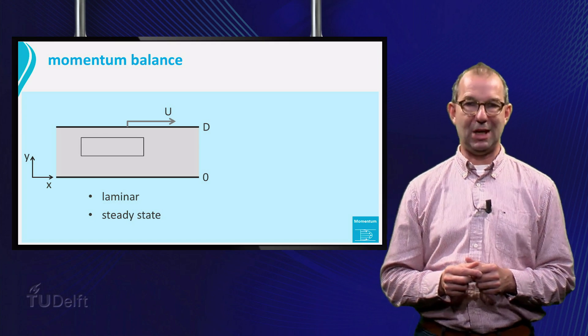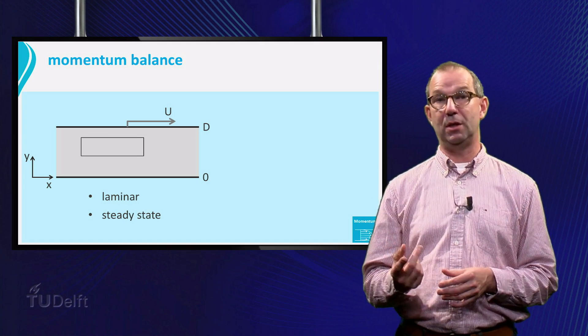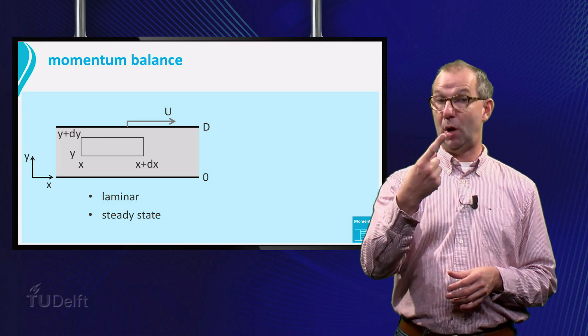To do so, we are going to set up a momentum balance for a small control volume in the fluid, between x and x plus dx and y and y plus dy.